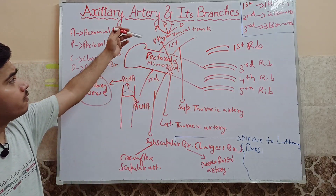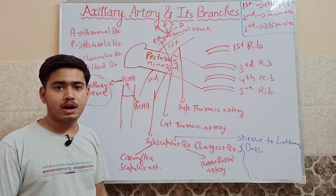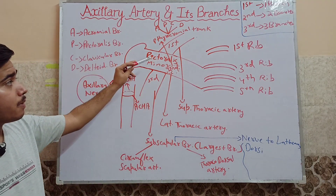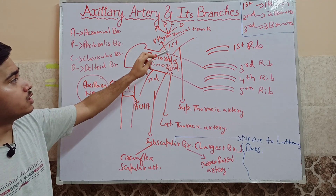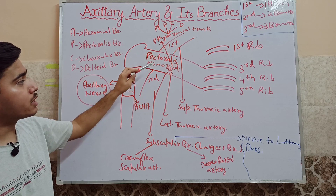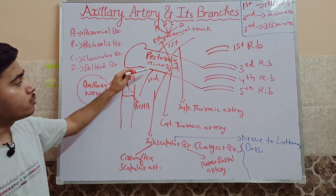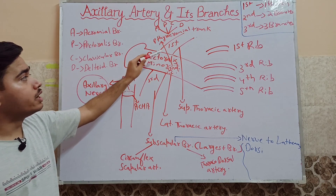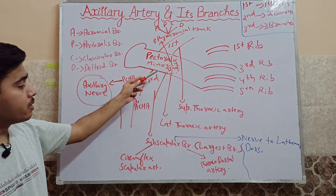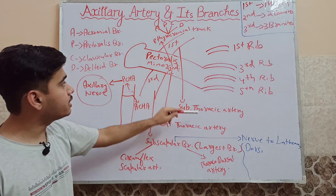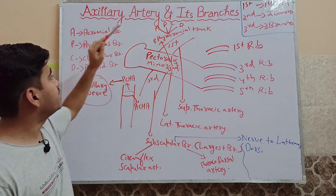Let's revise everything one final time. The axillary artery is a continuation of the subclavian artery. It is divided into three parts on the basis of the pectoralis minor muscle. The first part is superior to the pectoralis minor, the second part is posterior to it, and the third part is inferior to it. The first part gives us the superior thoracic artery. The second part gives us two branches: the lateral thoracic artery and the thoracoacromial trunk, whose sub-branches you can remember by the mnemonic APCD.